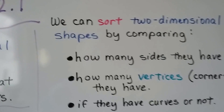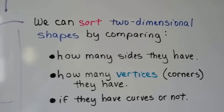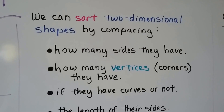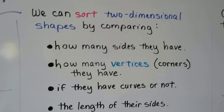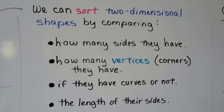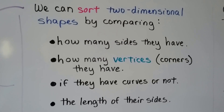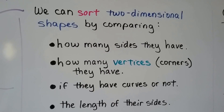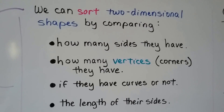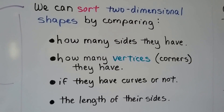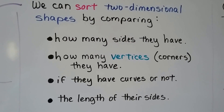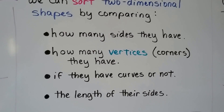We can sort two-dimensional shapes by comparing how many sides they have, how many vertices — you know, corners — that they have, if they have curves or not, or we could even sort them by comparing the length of their sides.